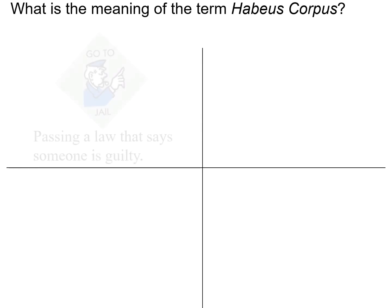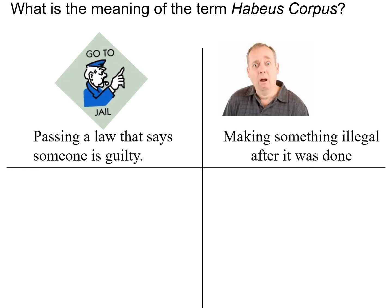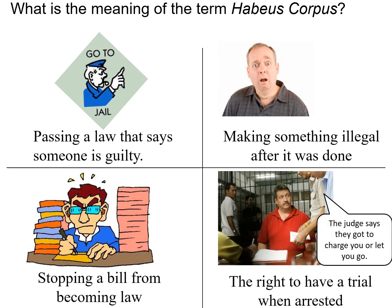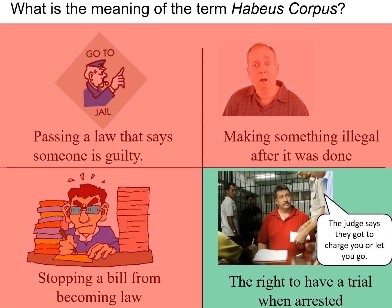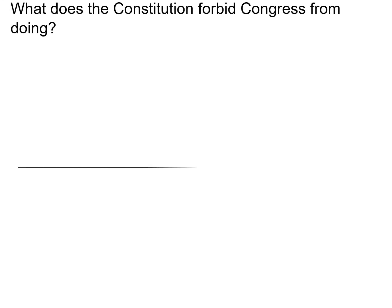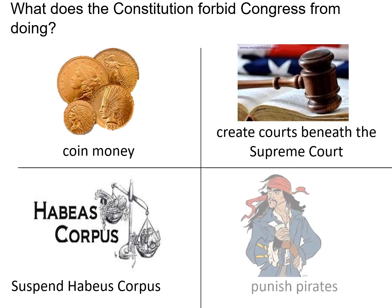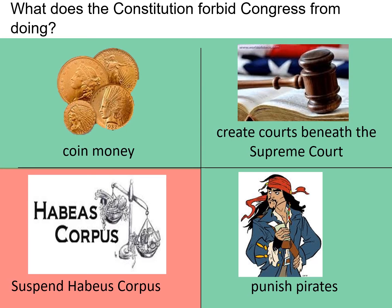What is the meaning of the term habeas corpus? Habeas corpus is the right to a trial after you're arrested. What does the Constitution forbid Congress from doing? Suspending habeas corpus is forbidden, except during times of rebellion.